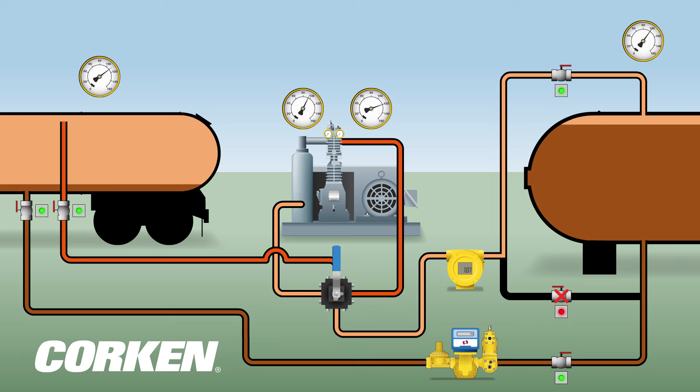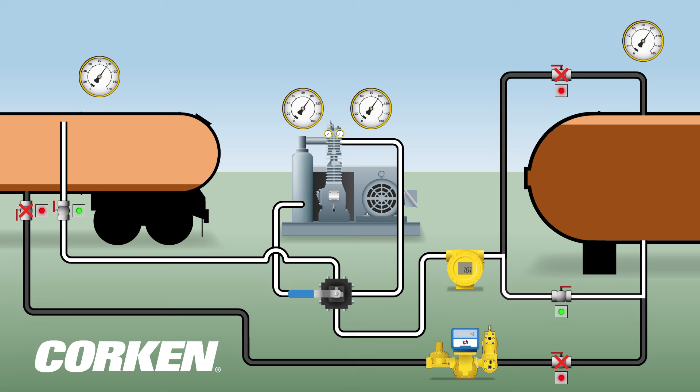The liquid transfer process is now complete. The compressor is turned off to begin the vapor recovery process. The four-way valve is reversed and other valves are opened or closed to facilitate the vapor recovery. The compressor is started and begins to draw the vapor from the transport tank.